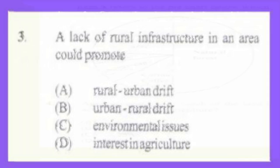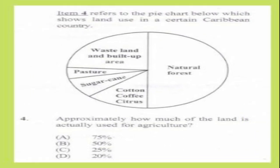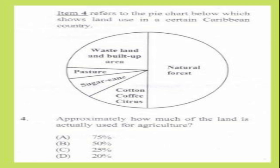Question number 4. Item 4 refers to a pie chart which shows land use in a certain Caribbean country. Approximately how much of the land is actually used for agriculture? A. 75%, B. 50%, C. 25%, D. 20%? The answer is C, 25%. Agriculture is a man-made activity, so the man-made activities from the graph are pasture, sugarcane, cotton, coffee, and citrus.